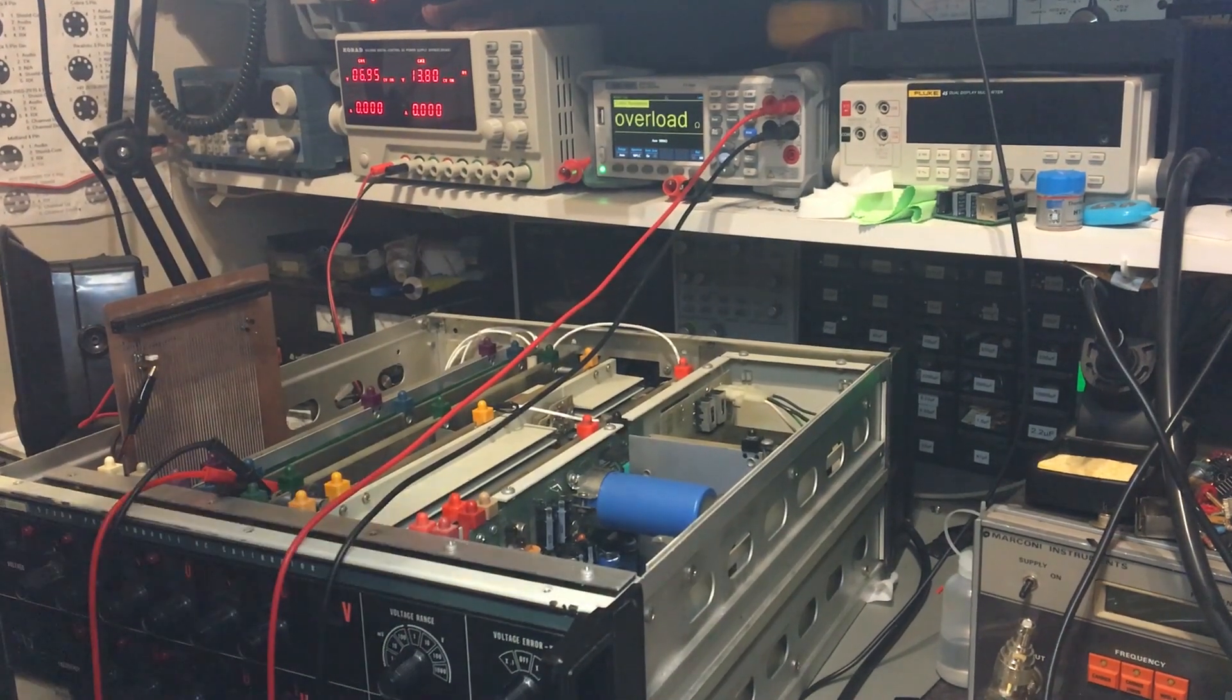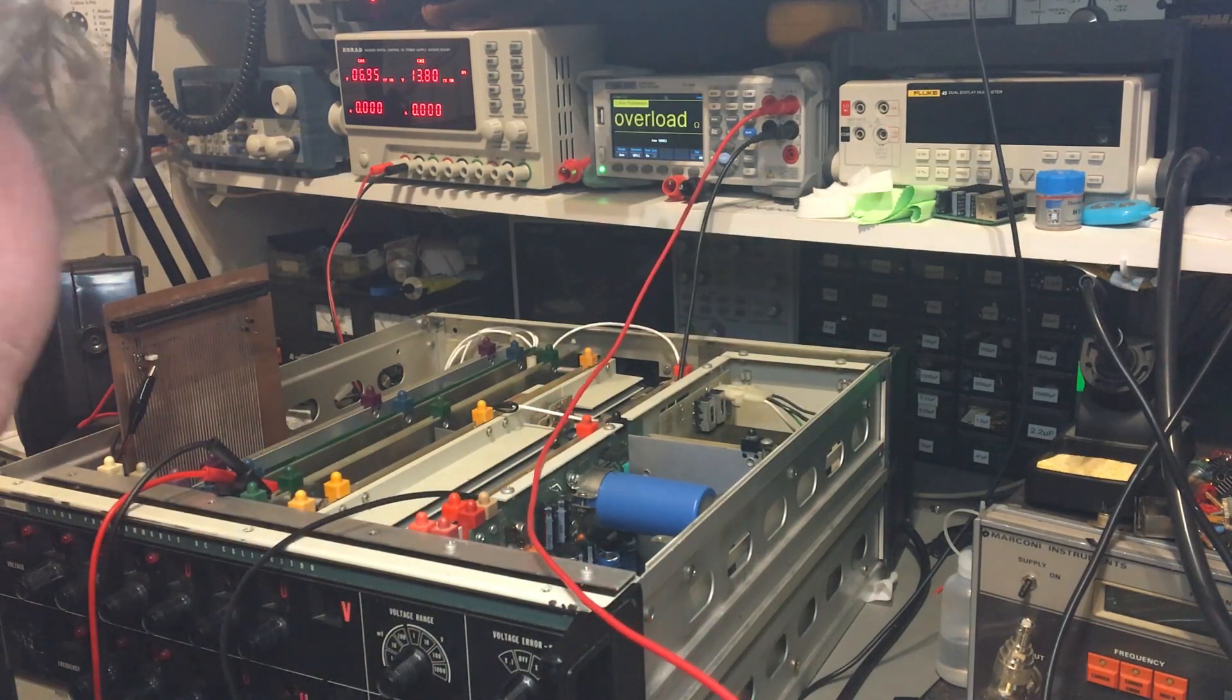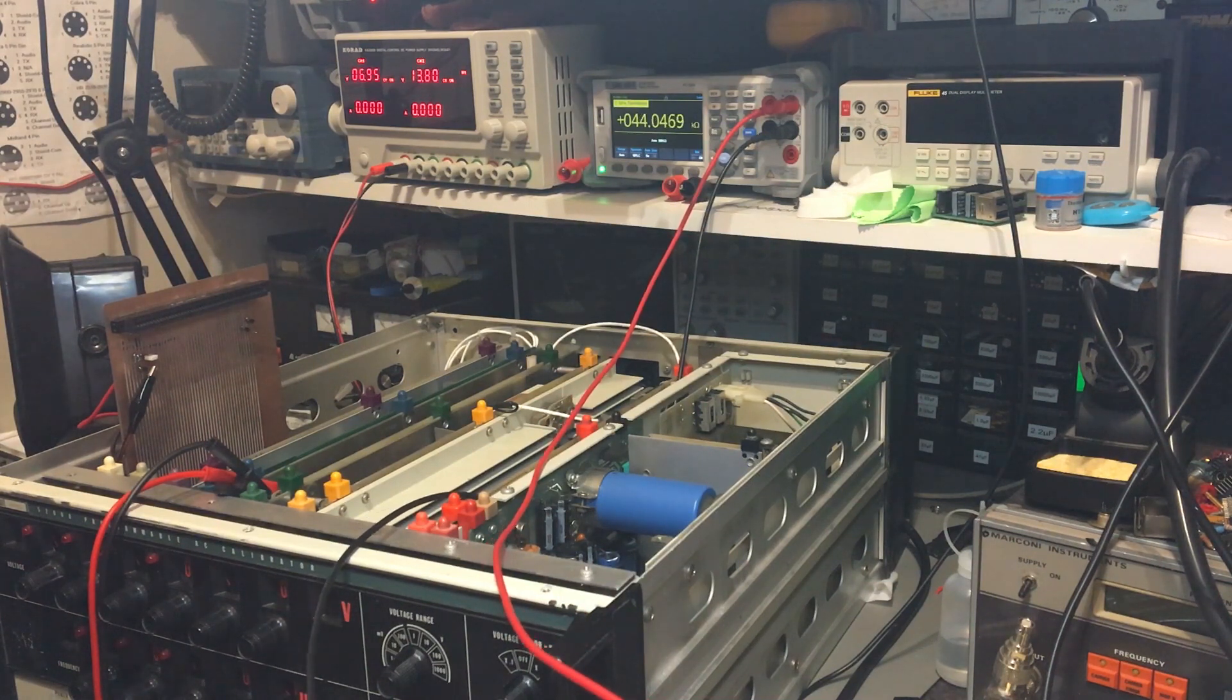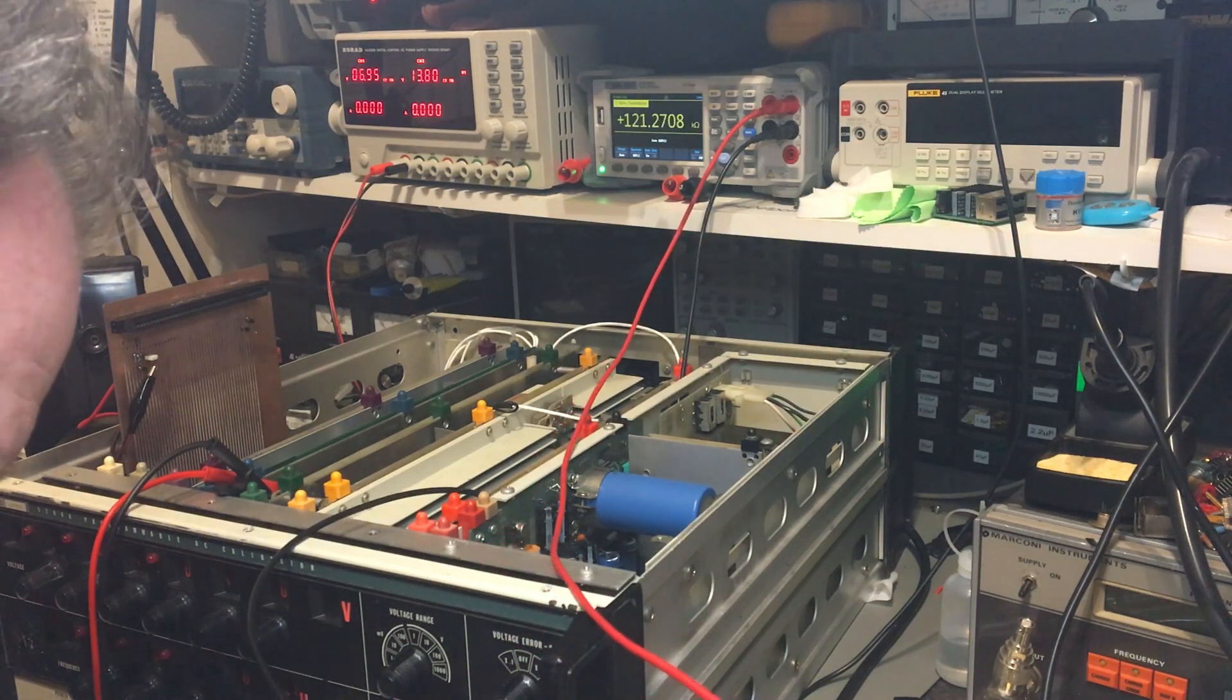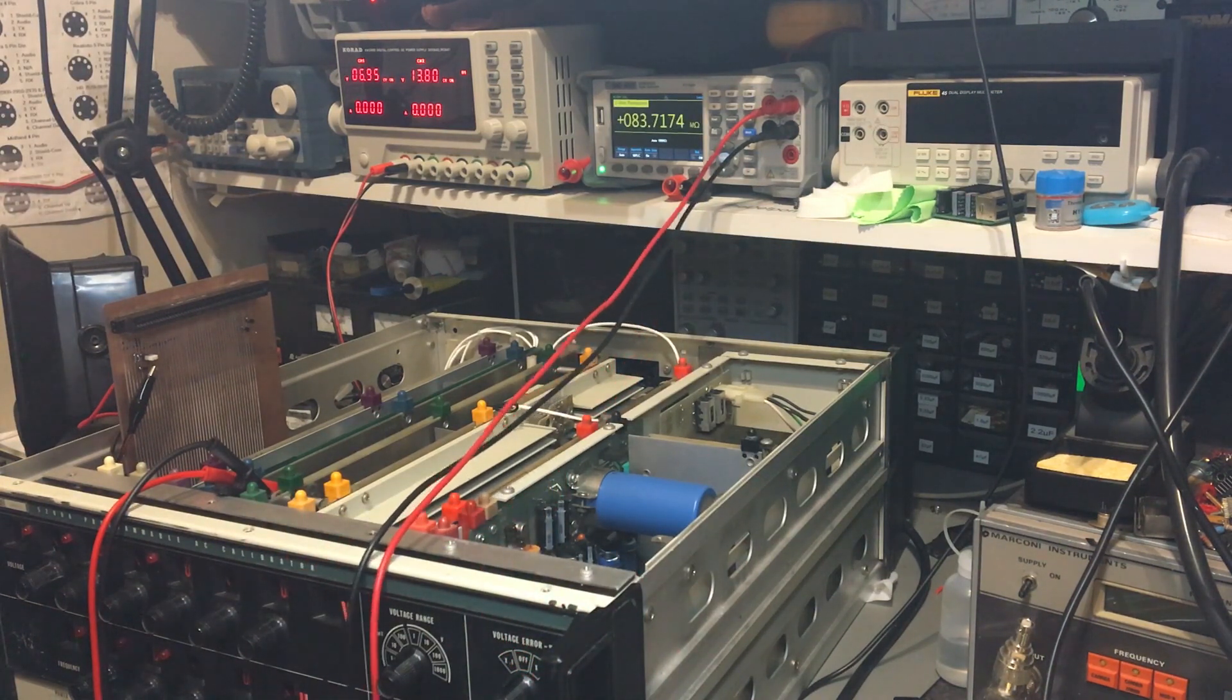So yeah, R10 is supposed to be a 3.9 ohm resistor. So I was going to measure that again, show you, so R10 right here, as you can see, no, it's doing 44k now, but yeah, it's definitely not 3.9 ohms.